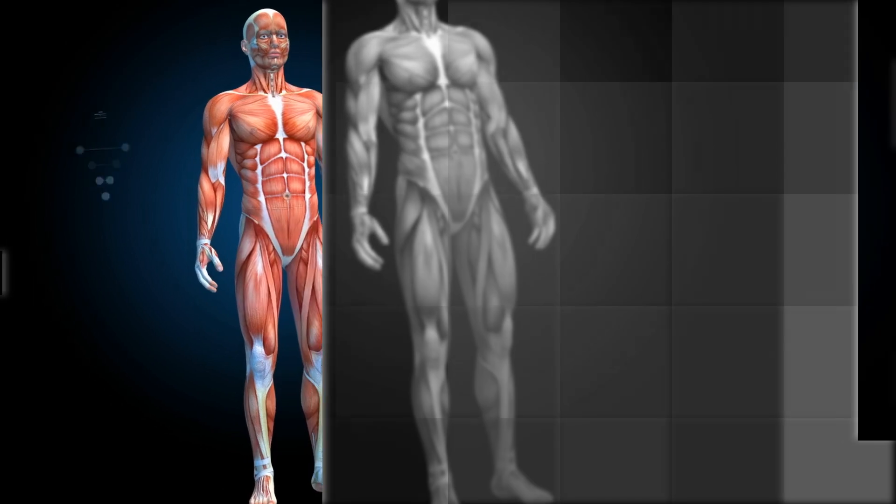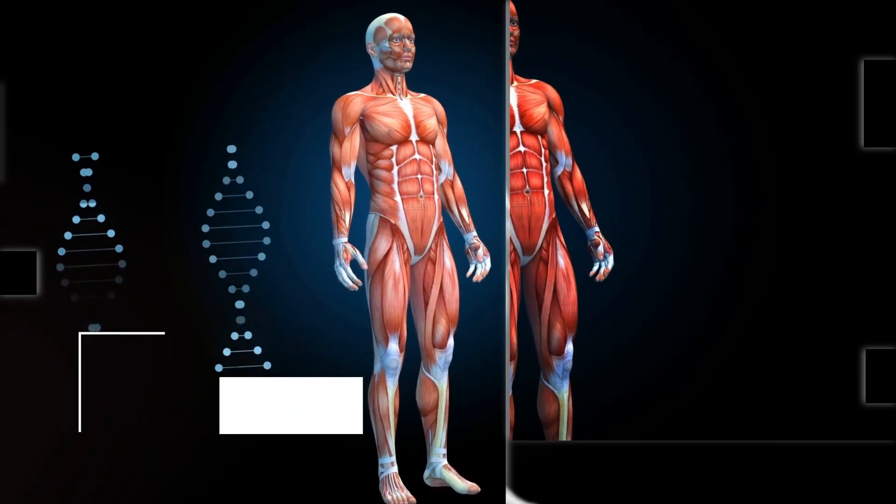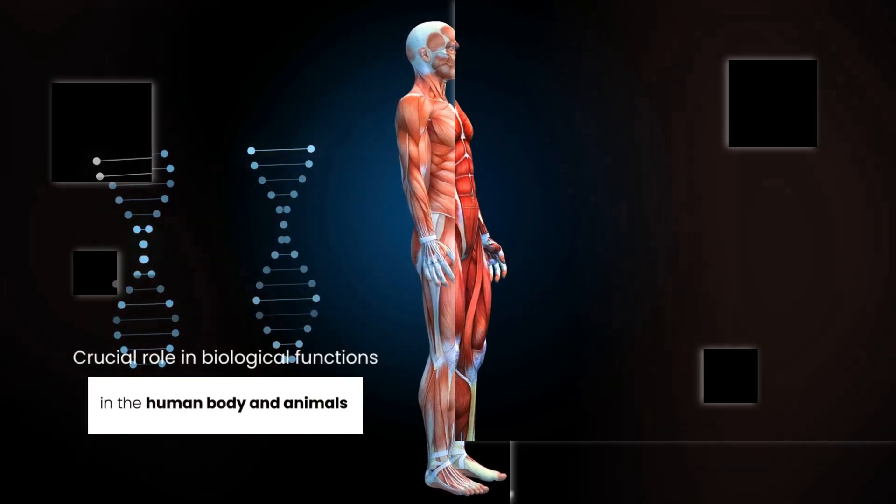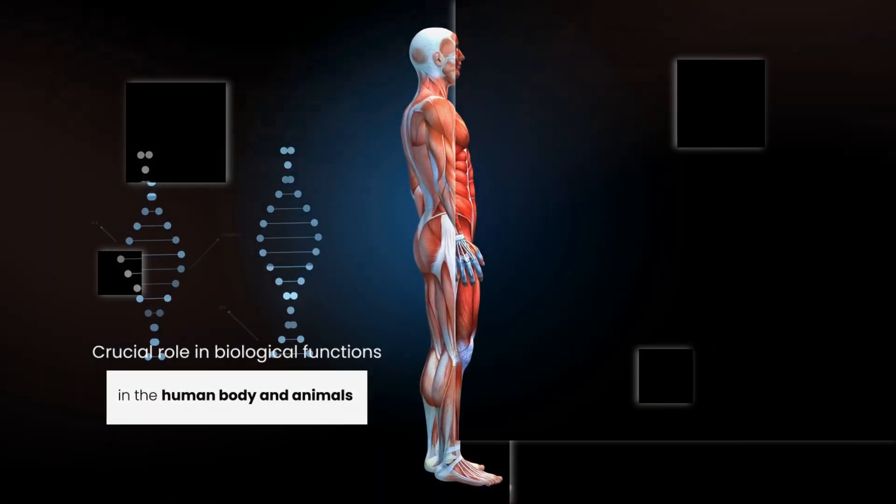Peptides play a crucial role in biological functions, with thousands occurring naturally in the human body and animals. They are vital for various biochemical processes.